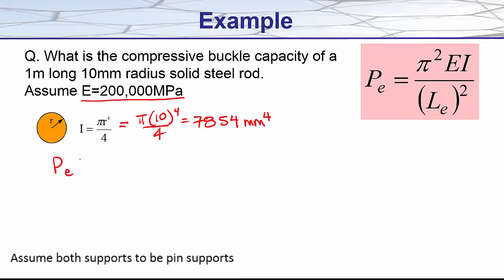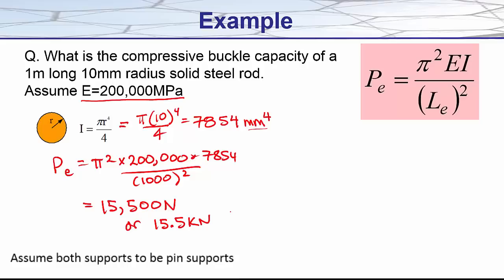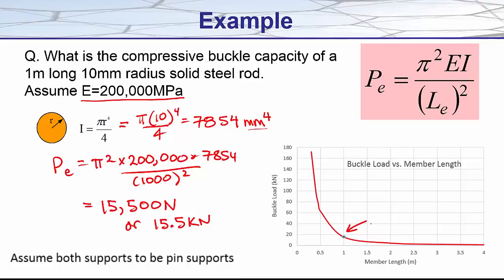Now calculating our buckle load we would simply substitute in all our values, which would give us a final value for the load in terms of newtons of 15,500 newtons or 15.5 kilonewtons. If one were to work out this buckle load for different lengths this is the curve you would get, and here you can see the value plotted at one meter. So when the member is longer than one meter our compressive member strength is dramatically reduced.